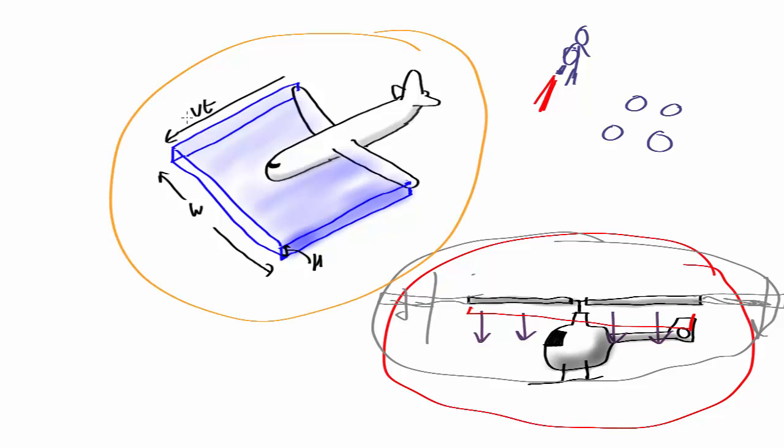If you imagine an airplane flying at some velocity V, this blue volume here is telling you the amount of air that in a given time t is going to come close to one of the wings and can therefore be deflected downwards.